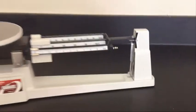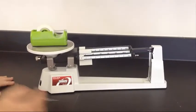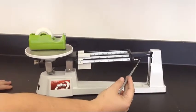The next thing you'll do is add your object to the plate. When the beam is all the way at the top, that indicates that the plate is too heavy.